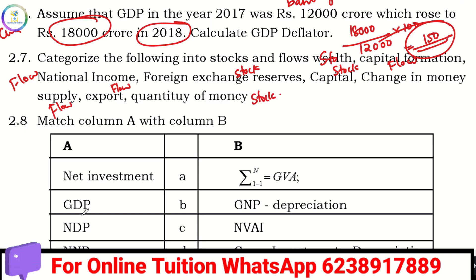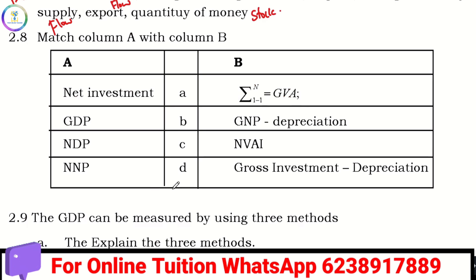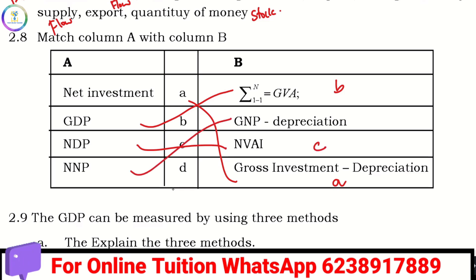Net investment means gross investment minus depreciation. For GDP, we use sigma i equal to 1 to n of GVA. NDP is the income concept. NNP is the NNP at market price and factor cost.